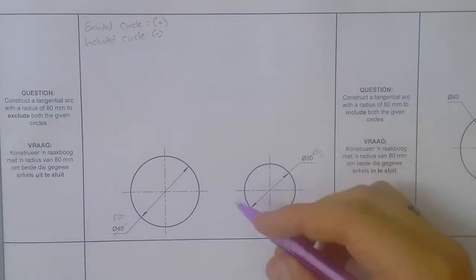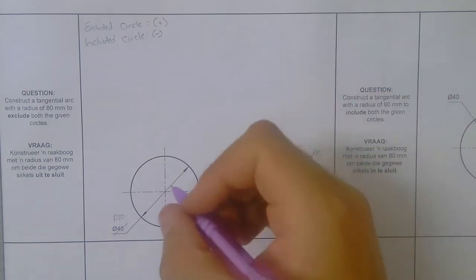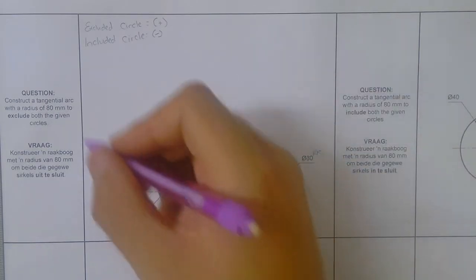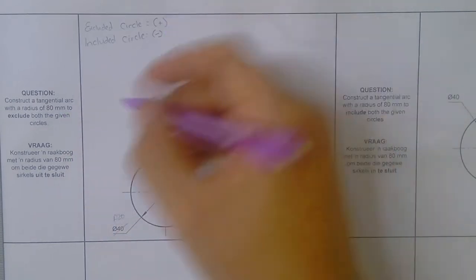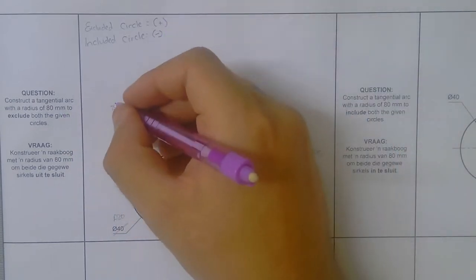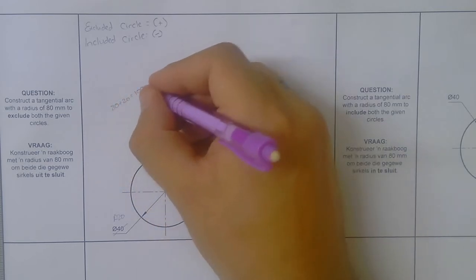Now what we want to do is we need to do a calculation first. So a calculation on this side, we take 80 plus 20 because it's excluded. You have to write this down. Whenever you do this, you write down 80 plus 20. That gives me 100.